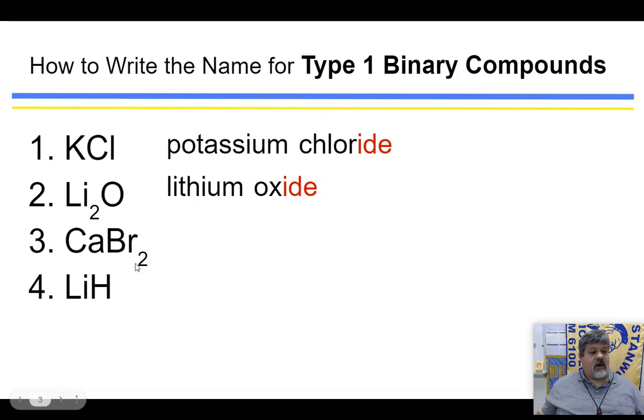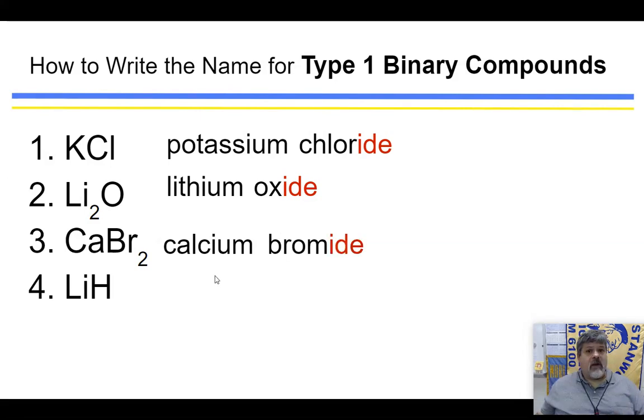Our next one, we have CaBr2. Again, we're not worrying about the subscripts. So we're just going to go ahead and put CA. We look at our periodic table. We see that CA is calcium, and BR is bromine. And we're going to change the ending of bromine to that IDE, and we'll end up with calcium bromide.